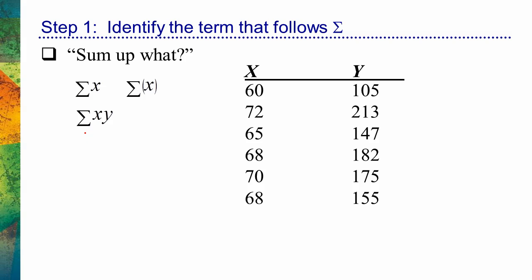What it's saying is: don't sum up anything until you have data in which you've taken the x variable and multiplied by the y variable. So this person was 60 inches and weighed 105 pounds, and this person is 72 inches and weighs 213 pounds — I have to multiply those: 72 times 213. Once I find all of those products — the answer from multiplication is called a product — then I need to sum them up. That's what this equation is asking: sum up the x's times y's. You're starting to see why it's so important that we ask ourselves: 'Sum up what? What are we being asked to sum up?'